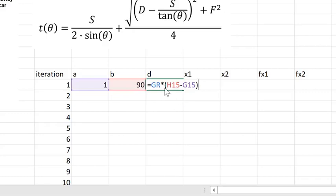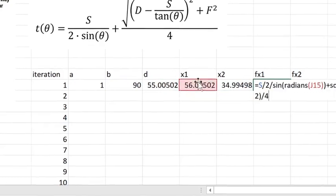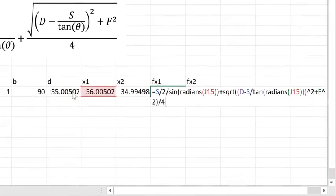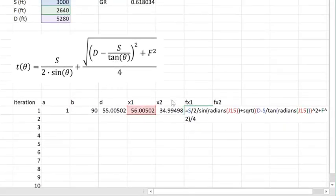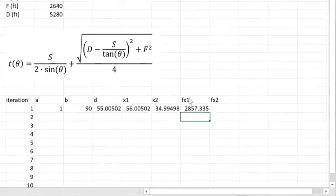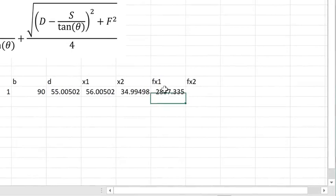D is equal to the golden ratio times b minus a, x1 is equal to a plus d, x2 is equal to b minus d, f of x1 is just taking x1 remember x1, x2, a, b these are our thetas so I'm plugging that, I'm plugging x1 into this function above making sure to convert the degrees because these are all in degrees to radians using the radians function and we get f of x1 and I can just copy this control c and paste it there.